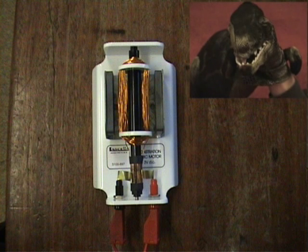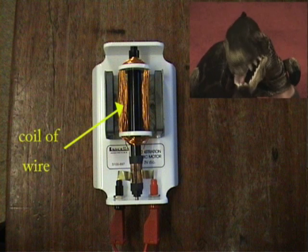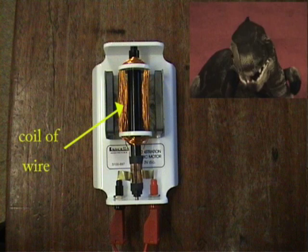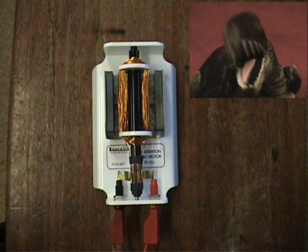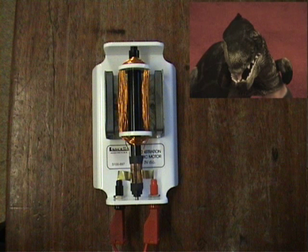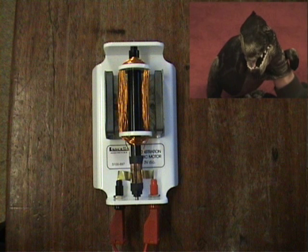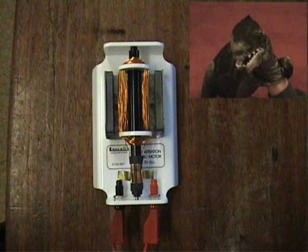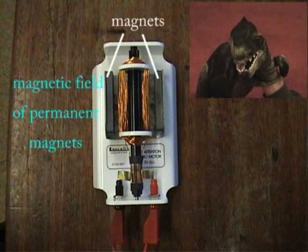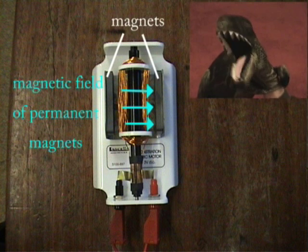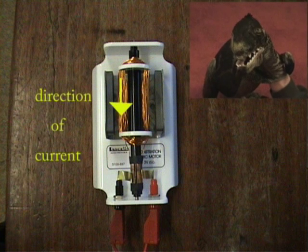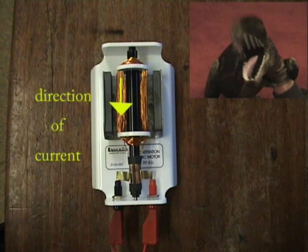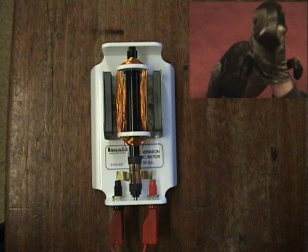With the electric motor, there is a coil of wire instead of a single wire. This makes a stronger magnetic field when the current flows. Now you can see that this coil is in another magnetic field. Let's have a look at the left side of the coil — when the current flows, the magnetic fields interact and this part of the coil is forced downwards.